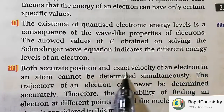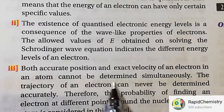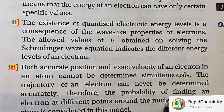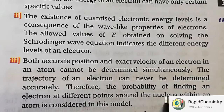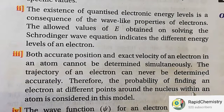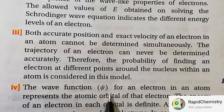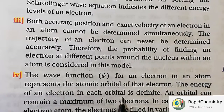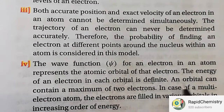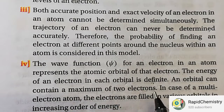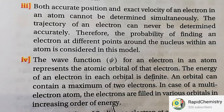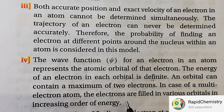Number three: both accurate position and the exact velocity of an electron in an atom cannot be determined simultaneously. The trajectory of an electron can never be determined accurately. Therefore, the probability of finding an electron at different points around the nucleus within the atom is considered in this model. The wave function psi for an electron in an atom represents the atomic orbital of the electron. The energy of an electron in each orbital is definite, and an orbital can contain a maximum of two electrons. In a multi-electron atom, electrons are filled in various orbitals in increasing order of energy. Orbit and orbitals are different things, and we will discuss that in detail.